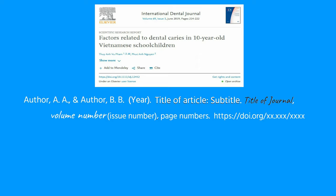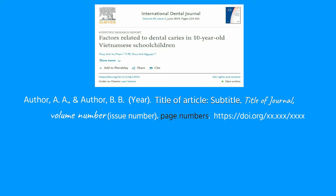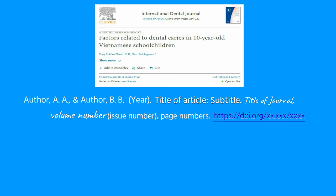The title of the journal is in title case, where most major words are capitalised. The title of the journal and volume number are in italics. The issue number is placed in parentheses, followed by the page numbers for the full article.